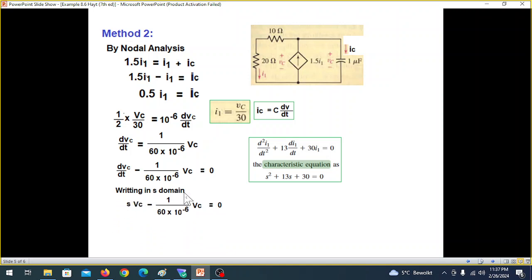we can convert dV/dt as S in S domain. So going into S domain, this will become S VC. And minus this remains same. When we take out VC common,